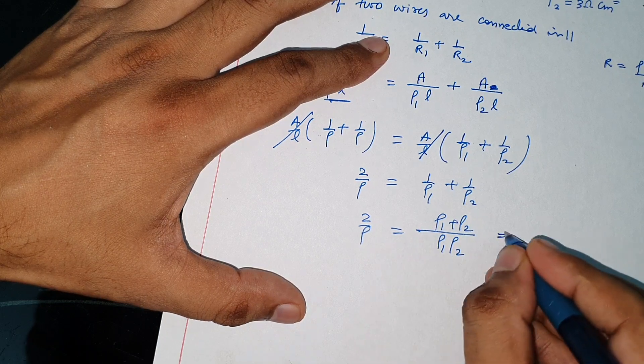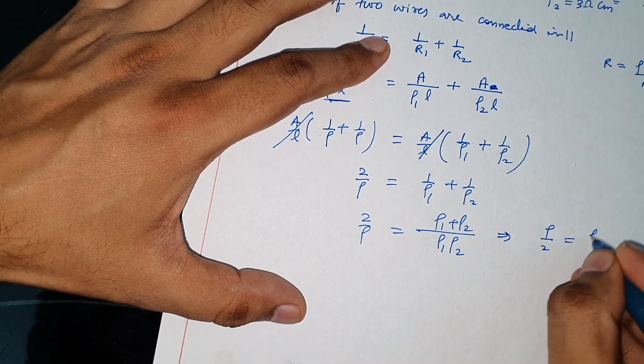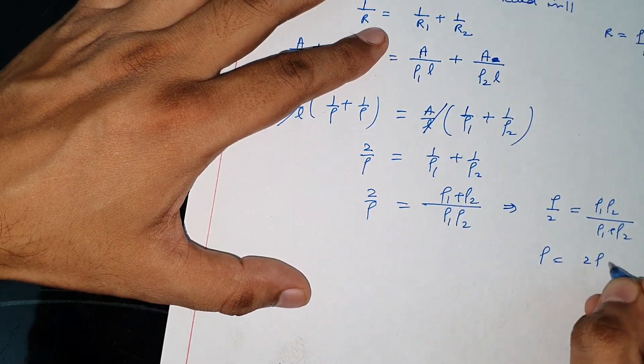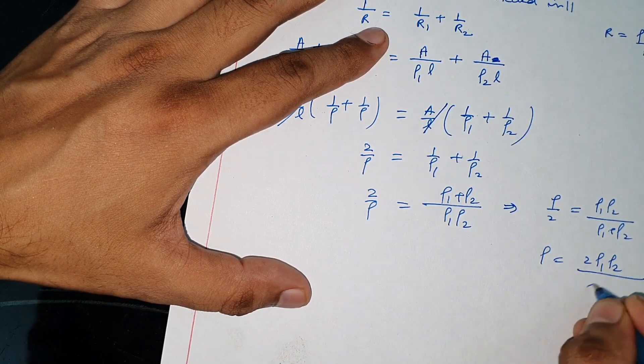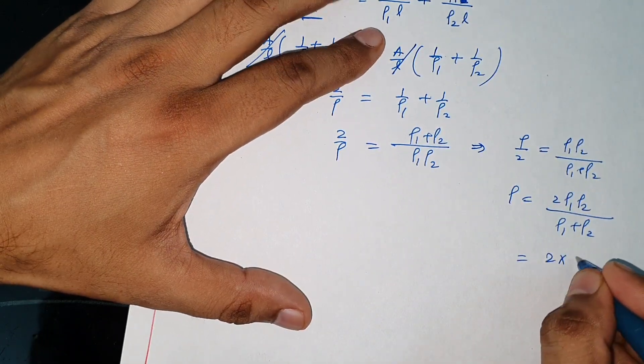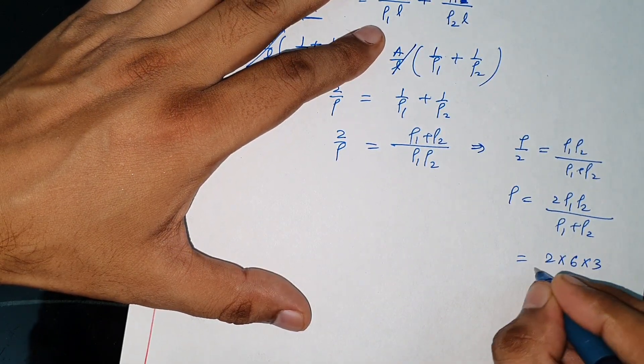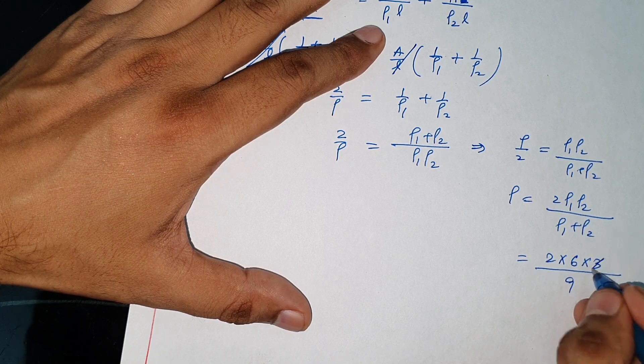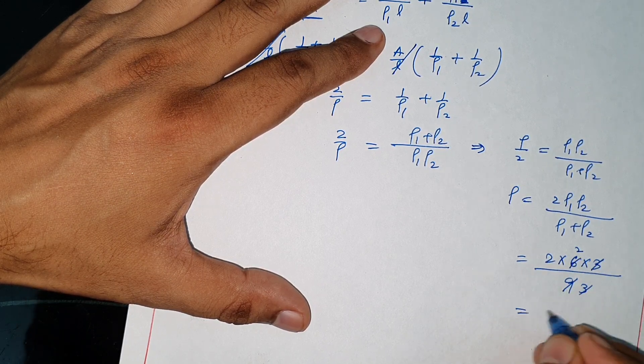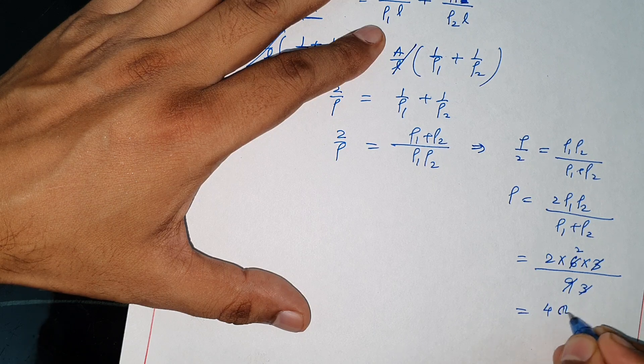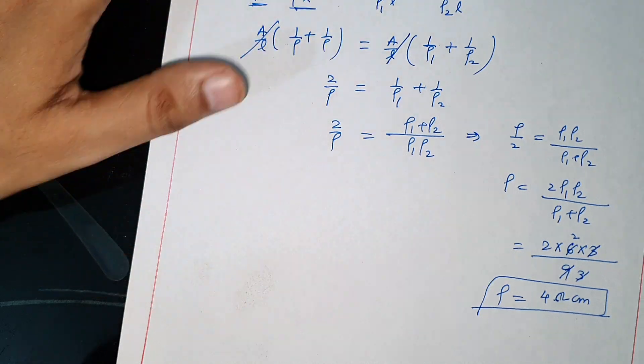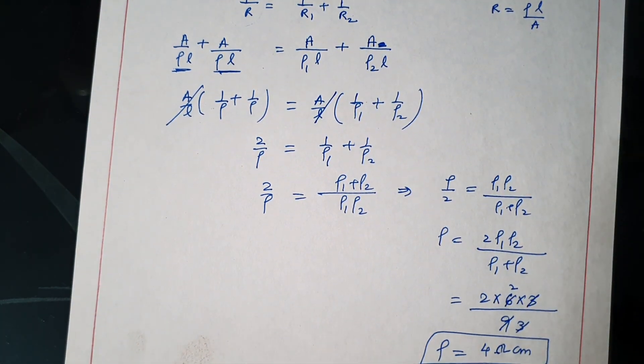Value put: rho 1 is 6, rho 2 is 3, and 6 plus 3 is 9. 6 times 3 is 18, 18 by 9 is 2, times 2 so rho is 4 ohm into centimeter. Rho is equal to 4 ohm into centimeter.